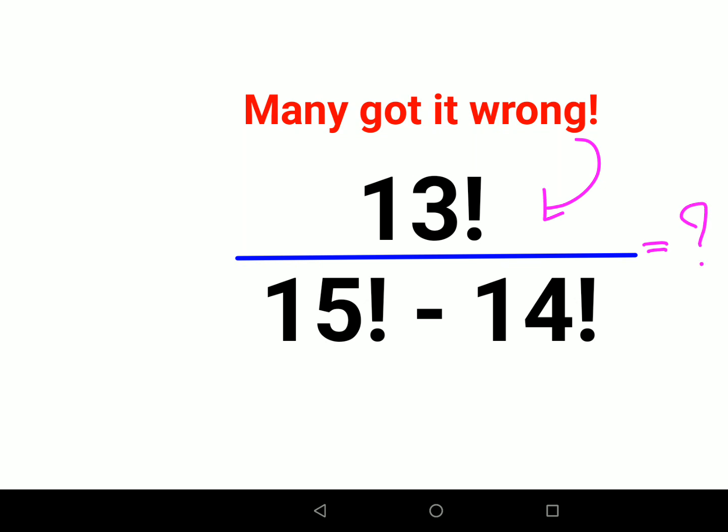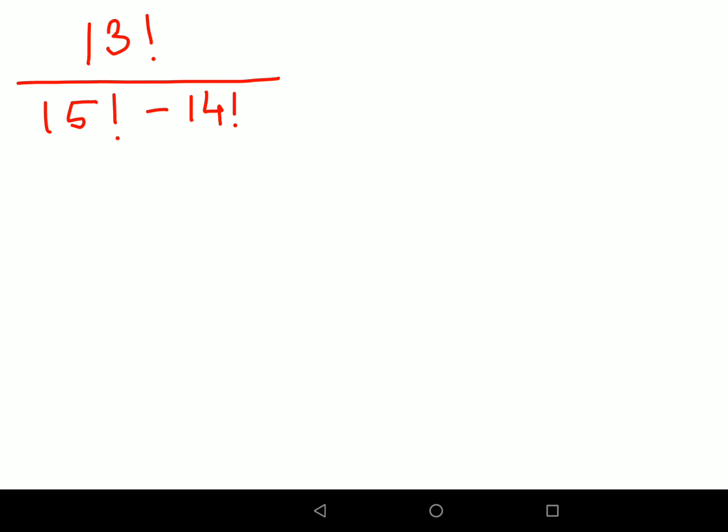So now how do we do this? Here what we can do is, we can focus on the denominator part. So we have 15 factorial, and then we have minus 14 factorial.